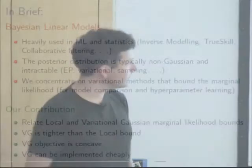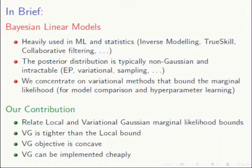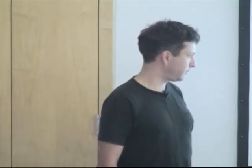These methods are particularly useful if you want to do hyperparameter learning, because you can increase the lower bound with respect to the parameters. The story is basically how we're going to relate local variational Gaussian likelihood bounds. What we want to show is that the variational Gaussian bound is tighter than the local bound. These local bounds have been more popular the last ten years or so, but in fact they are sub-optimal — the variational Gaussian bound is uniformly superior. Furthermore, it's actually concave and can be implemented cheaply.